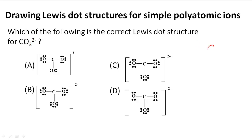So first we draw the skeleton of the Lewis dot structure and we put the central atom, the least electronegative atom, so that's going to be C, and oxygens are going to be surrounding that carbon.